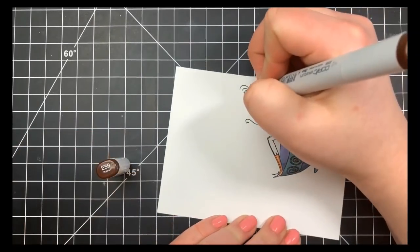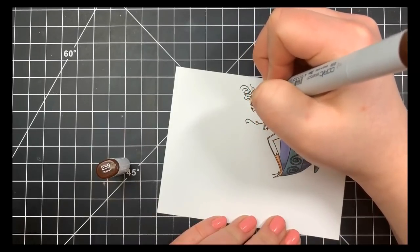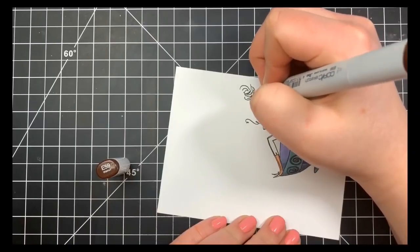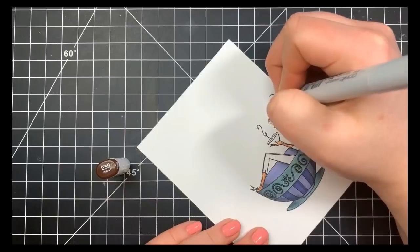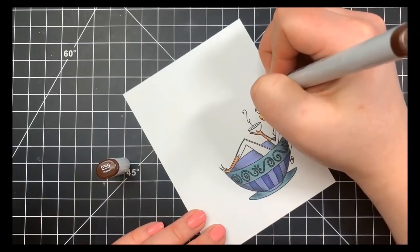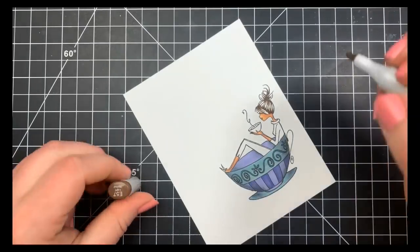For her hair, I'm going to start off with my darkest color. Whenever I color hair, I tend to start with my darkest first and I'm just doing some flick lines from where her little messy bun starts and where her hair is kind of pulled back from her bangs, and then just a few little flicks in that messy bun just to kind of give it some texture.